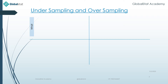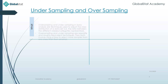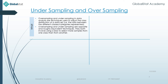So what exactly is undersampling and oversampling? Oversampling and undersampling in data analysis are techniques used to adjust the class distribution of a data set — that is, the ratio between the different classes and categories which are represented.